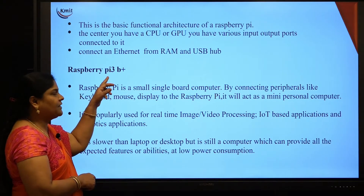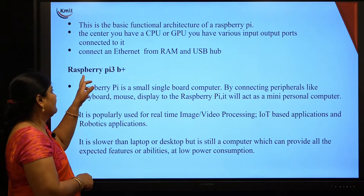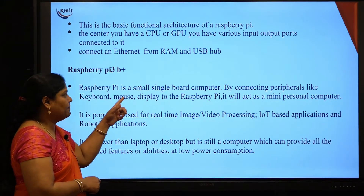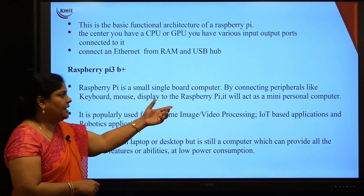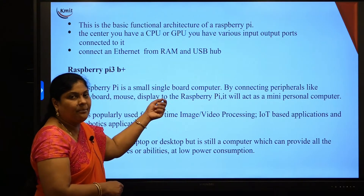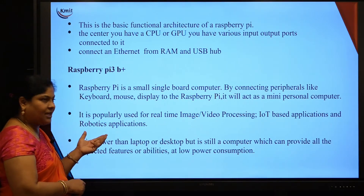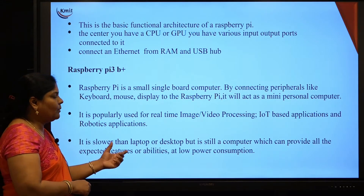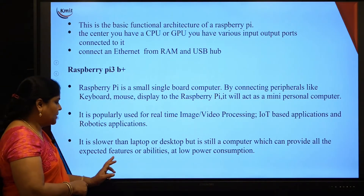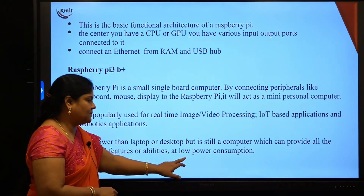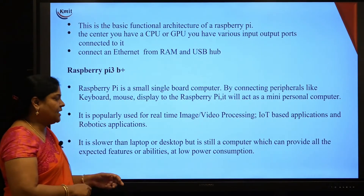Now we are talking specifically about Raspberry Pi 3 B Plus. By connecting peripherals like keyboard, mouse, and display, it looks like a mini personal computer. It is popularly used for real-time imaging, video processing, IoT-based applications, and robotic applications. It is slower than a laptop or desktop, but provides all the accepted features at low power consumption.